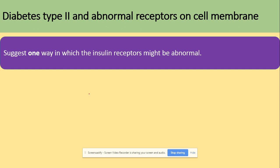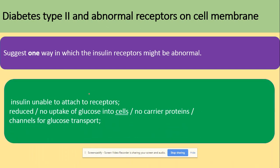Another question asks how insulin receptors might be abnormal. Insulin is unable to attach to the receptors on the target cells — the liver cells. This reduces the uptake of glucose into the cells by facilitated diffusion because there are no carrier proteins or channel proteins for transport.